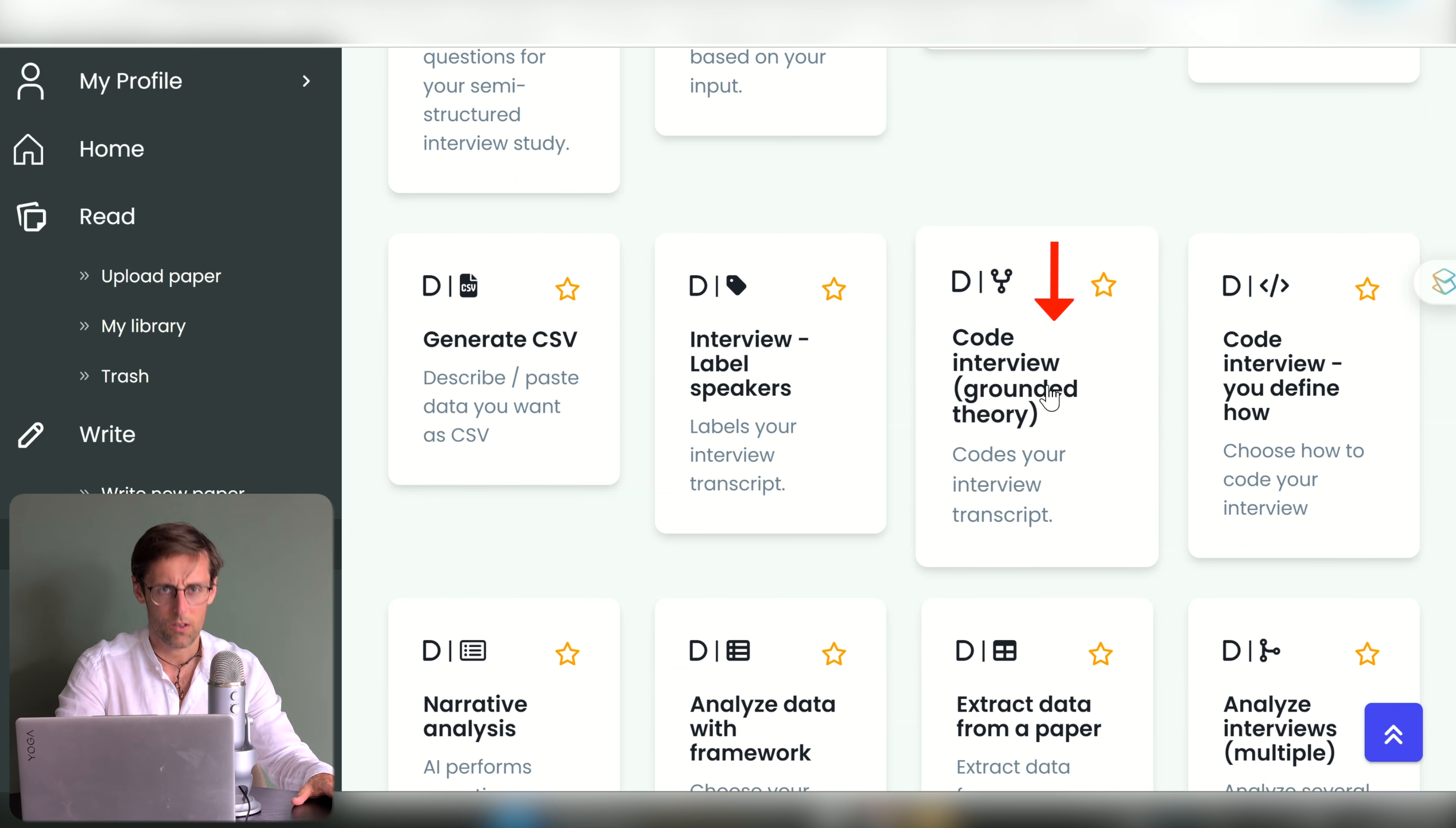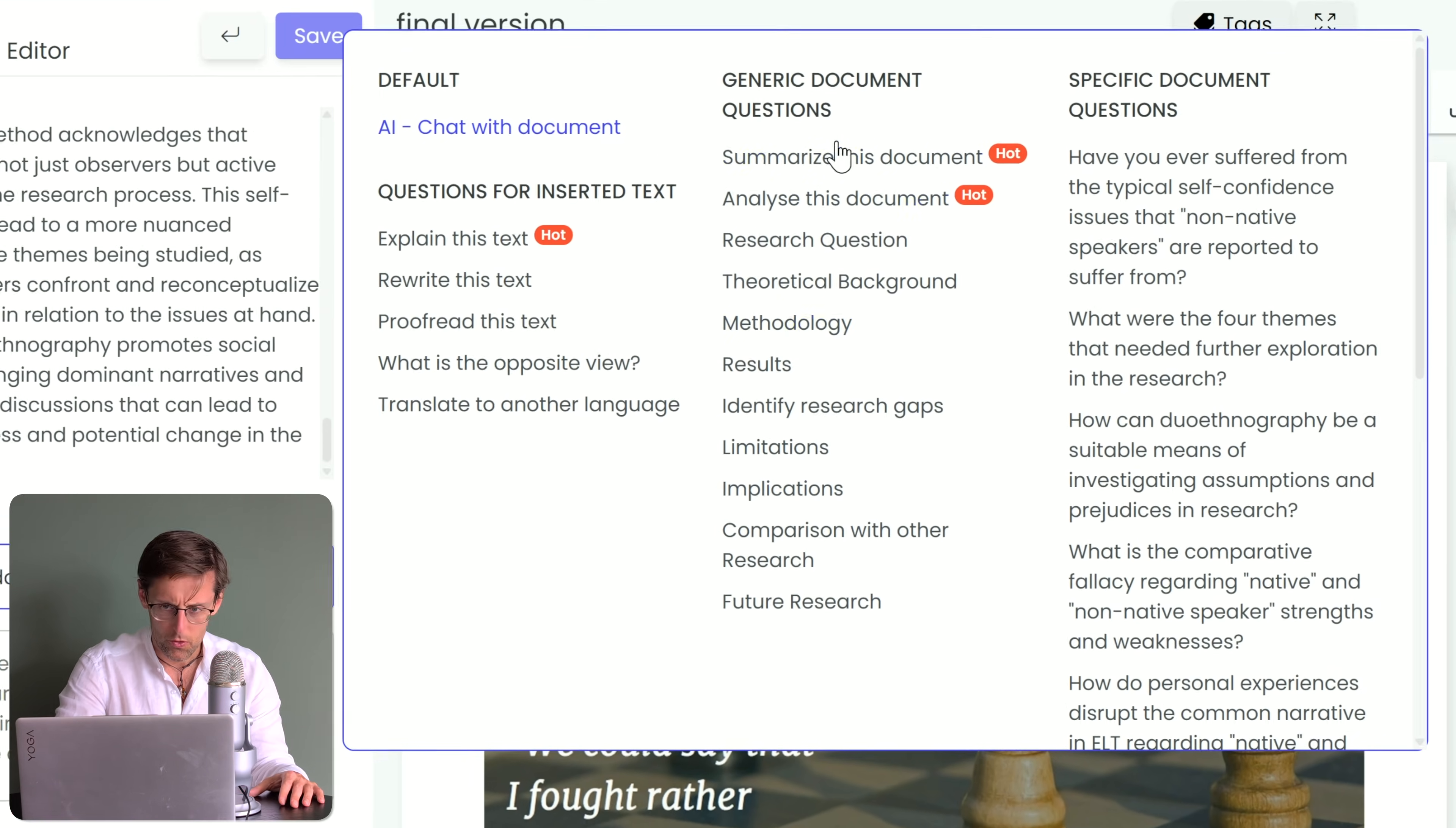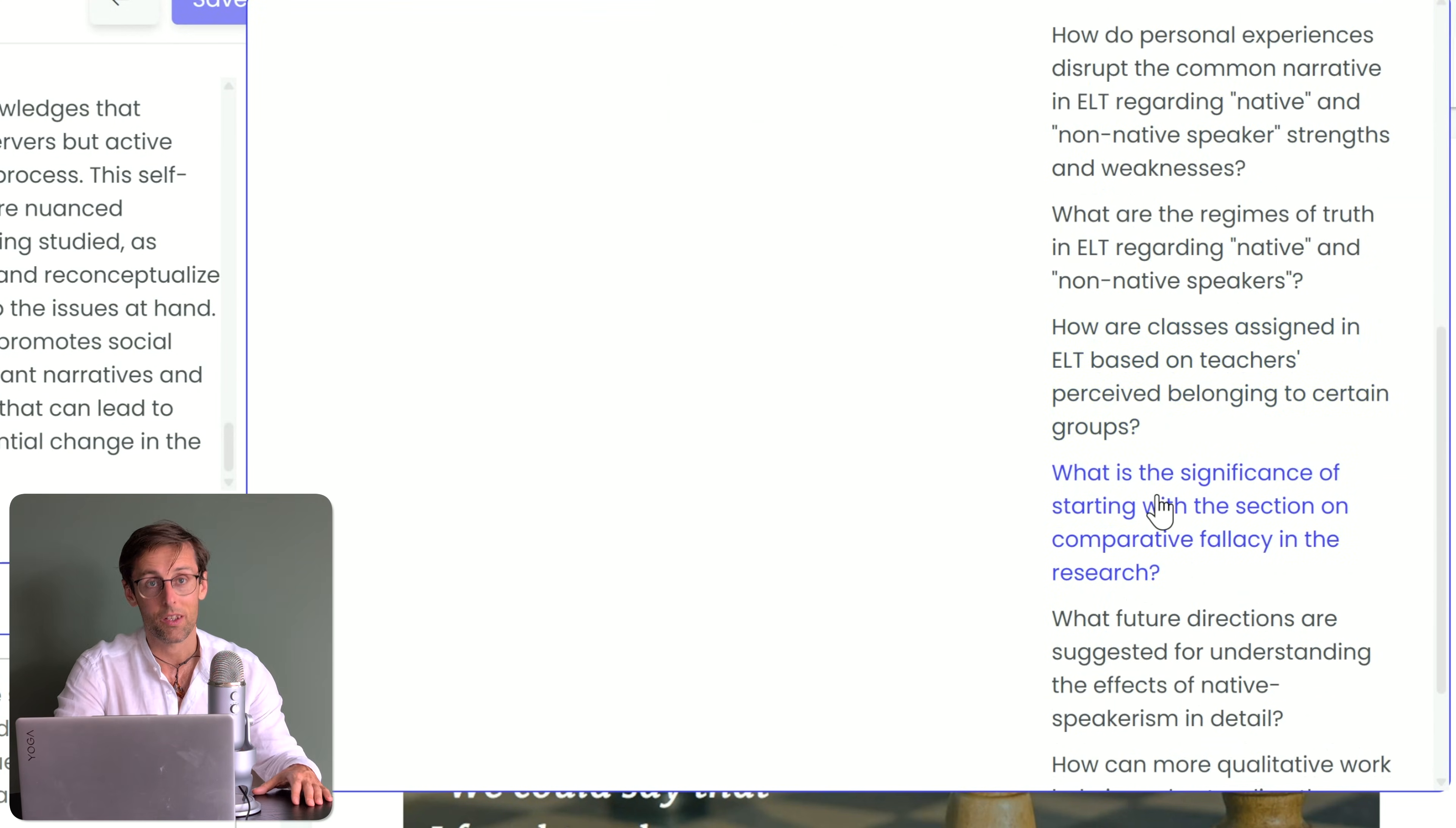I forgot that it actually also helps you to analyze your data. For example it can code the whole interview using grounded theory or another qualitative approach and it also allows you to read papers much faster because you can upload a paper in here and then AvidNote will analyze it really quickly and suggest questions for you and not just generic document questions but actually questions that are very specific to this particular document which I think is fantastic and missing from many other AI tools.